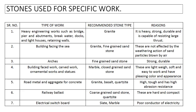For the work of arches, fine-grained sandstone is used because it is strong and durable. For building faced work, carved work, ornamental works, and statues, marble and close-grained sandstone are used because these are lightweight, soft, easy to work, and have a pleasing color and appearance. For road work and concrete work, granite, basalt, and quartzite are used because of high toughness and high abrasion resistance. In railway ballast, coarse-grained sandstone and quartzite are used because these are hard and compact. For electrical switchboards, slate and marble are preferred because they are poor conductors of electricity. These are the uses of stones for various construction works.